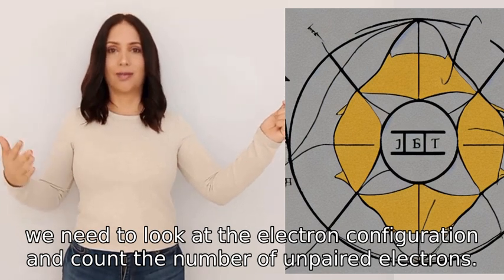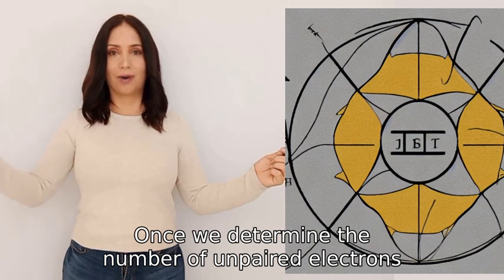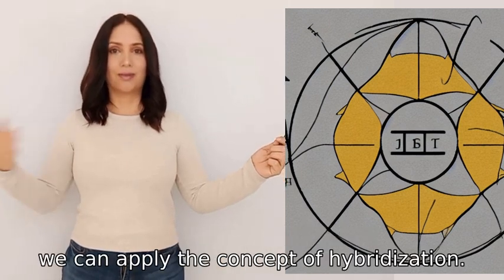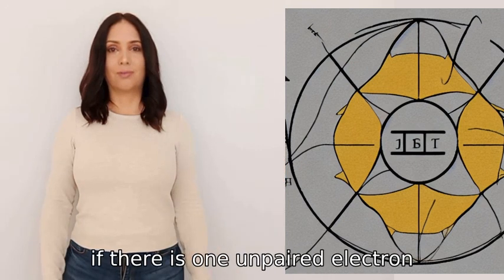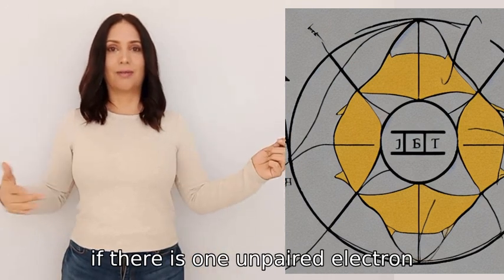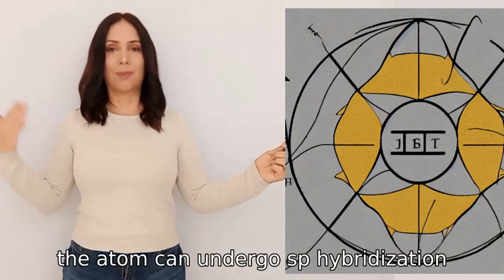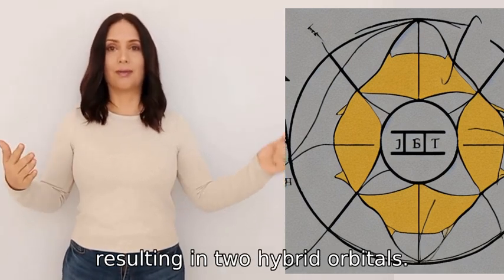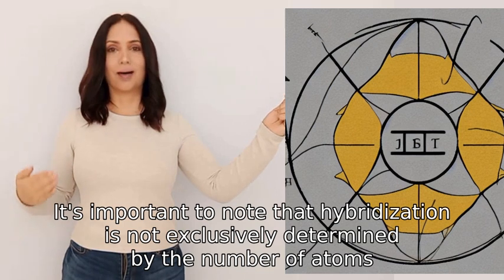Once we determine the number of unpaired electrons, we can apply the concept of hybridization. For example, if there is one unpaired electron, the atom can undergo sp hybridization, resulting in two hybrid orbitals. It's important to note that hybridization is not exclusively determined by the number of atoms, but also by the electron configuration.